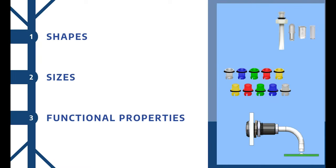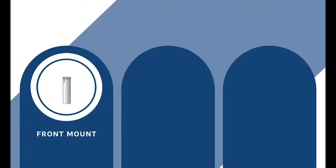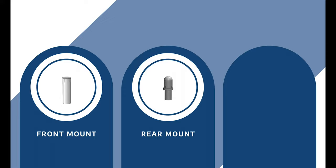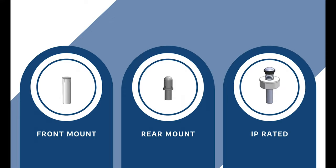Bivar offers light pipes in a variety of shapes, sizes, and functional properties. A variety of configurations are available including front mount which are installed from the exterior of a panel, rear mount which are installed from the interior of a panel, and front mount IP rated which contain a seal, washer, nut, and threaded light pipe for more secure retention to ensure dust and water protection as well as vibration resistance.